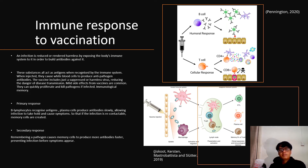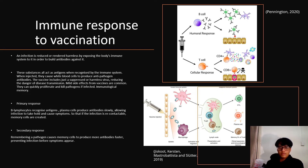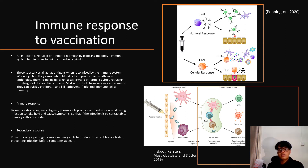In the primary response, when a pathogen is initially met, it takes time for B cells to identify the antigen and for plasma cells to make the necessary antibodies, allowing infections to take hold and cause symptoms. This is when memory cells are made, which may recognise the infection if contacted again. In the secondary response, when the same pathogen is contacted again, memory cells recognise it and make more antibodies, typically fighting off infections before symptoms appear.